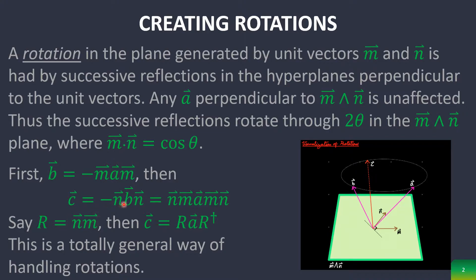So you do successive reflections which are encoded in this equation right here. You let R equal NM and then you can express it by having R and the reverse of R around a vector A.